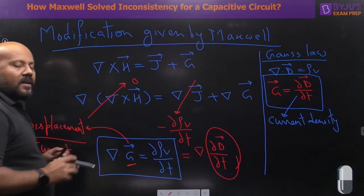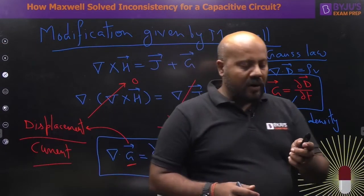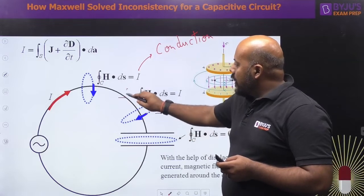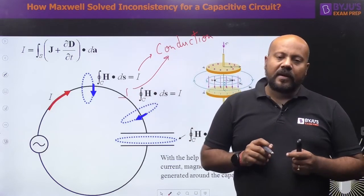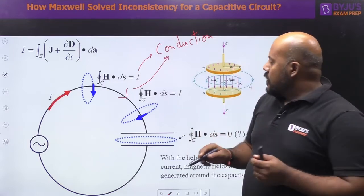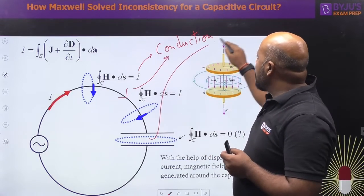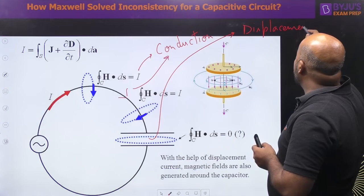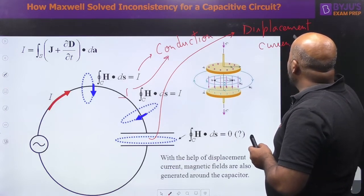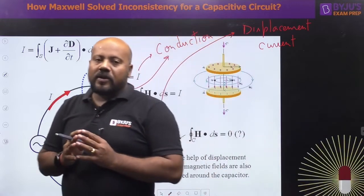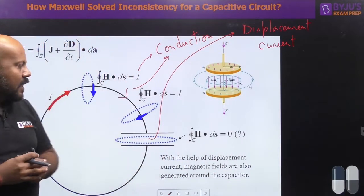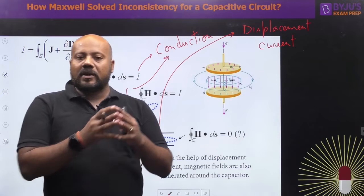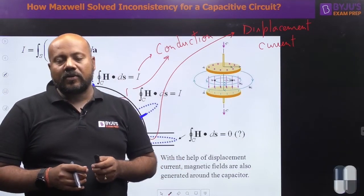So what is happening in the capacitive circuit where Ampere's circuital law was not able to be satisfied? Maxwell said that just as you see conduction current in the conducting wire, similarly in between the two parallel plates of the capacitor we have displacement current. Once you understand that displacement current defines the continuity of current in a capacitive circuit, it is very interesting to know how conduction current and displacement current are related to each other.